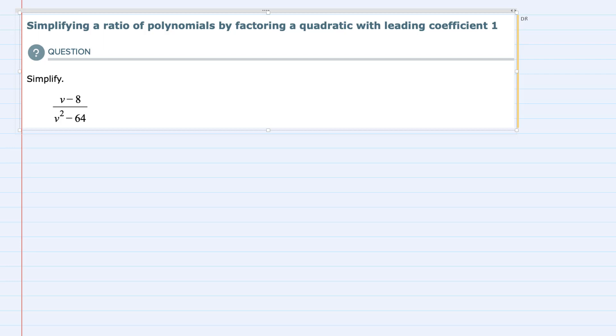We're asked to simplify this expression, and in order to simplify a fraction I need to get the same items being multiplied in both the top and the bottom.